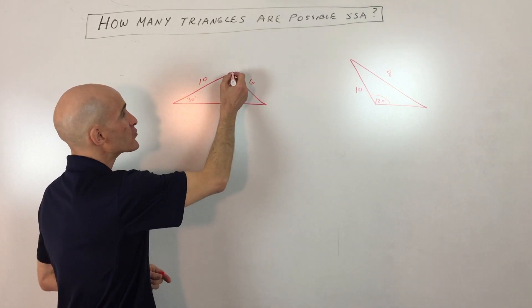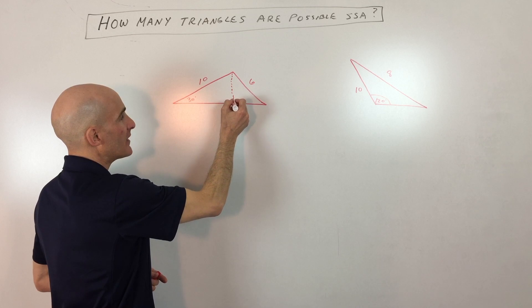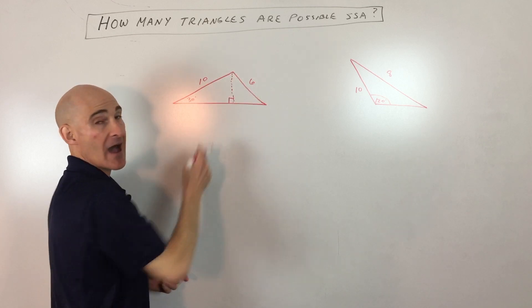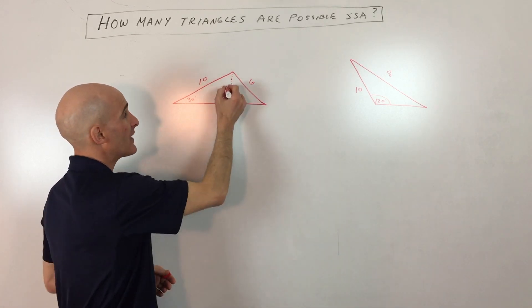So here's what you're going to do. You're going to want to drop an altitude, like a perpendicular to the opposite side. We have to find out what that height is.